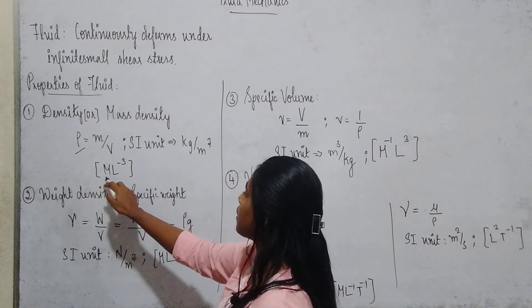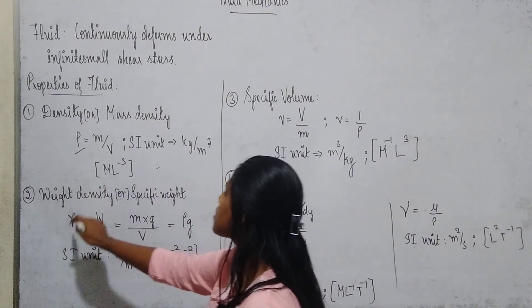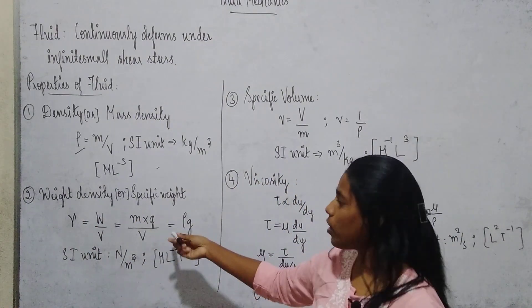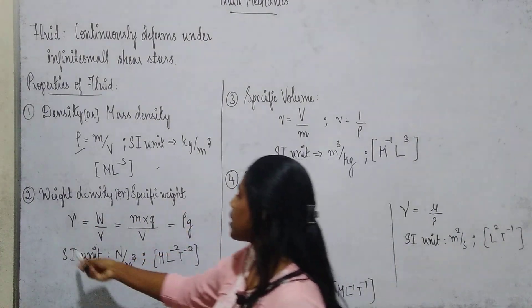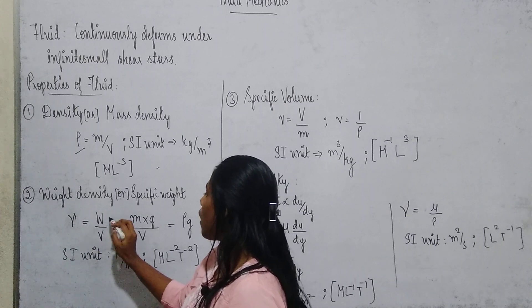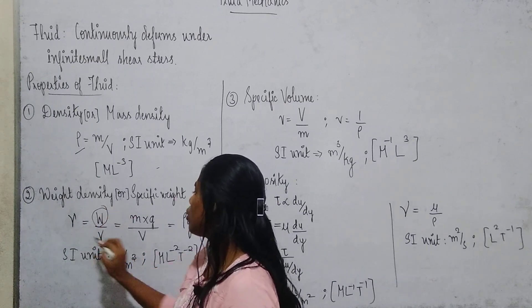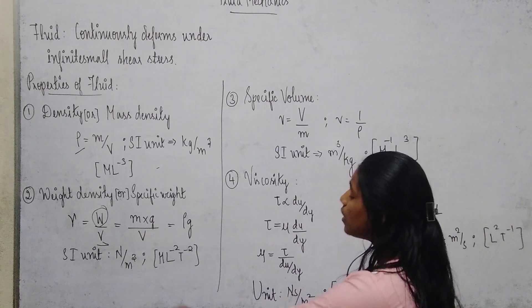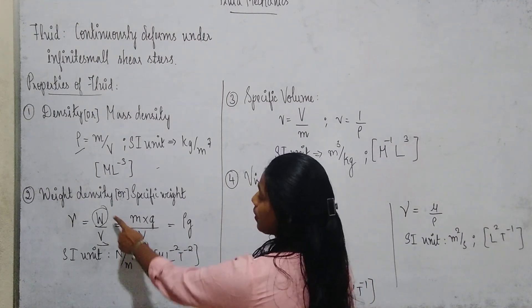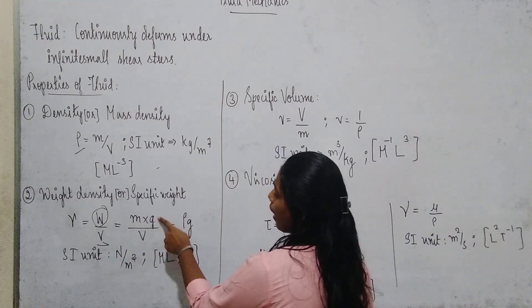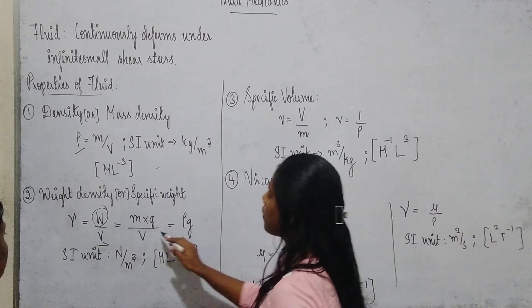Second one is weight density, also called specific weight. It is represented by gamma, that is weight by volume, W by V. W is represented as mass into acceleration due to gravity divided by V.